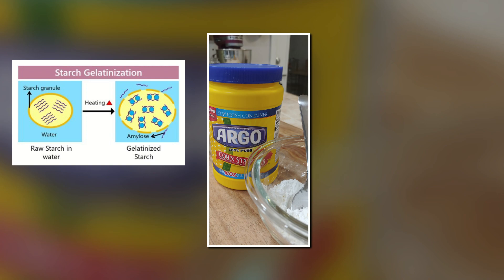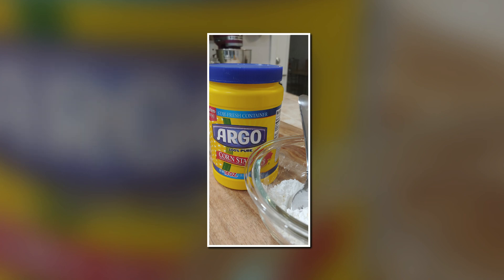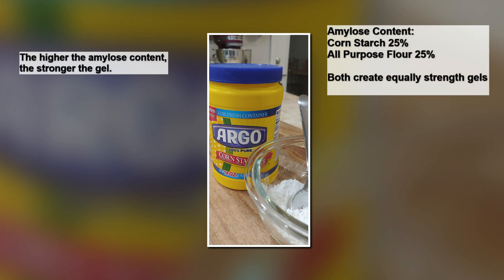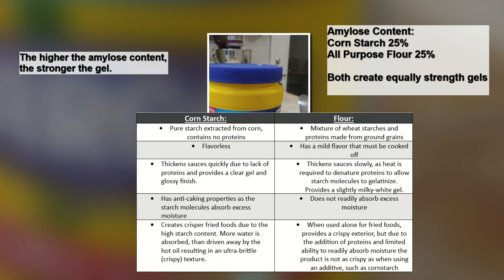Almost all of cornstarch's properties come from its ability to gelatinize. The proportion of amylose starch in your mixture dictates how strong of a gel you will have — the higher the amylose content, the stronger the gel. Cornstarch has an amylose content of about 25%, and so does all-purpose flour, also at about 25%.